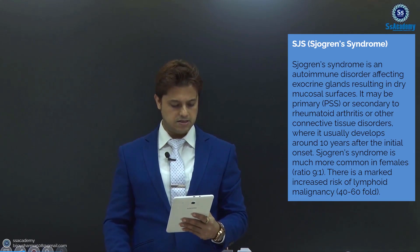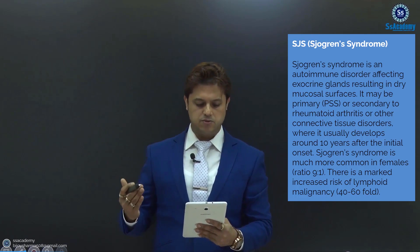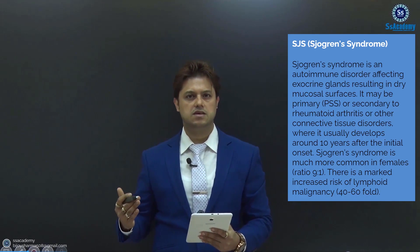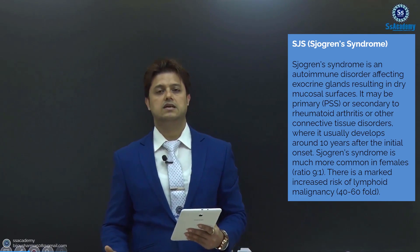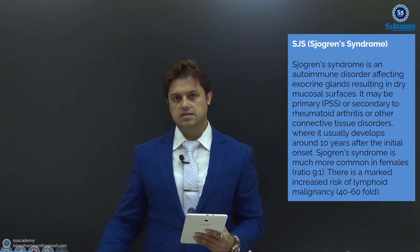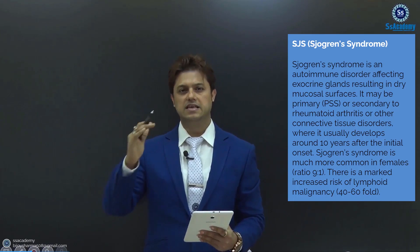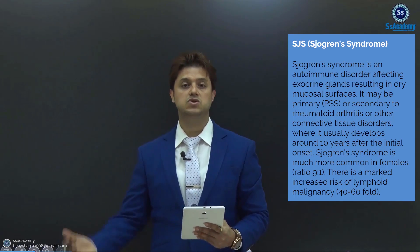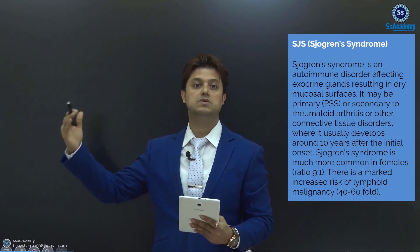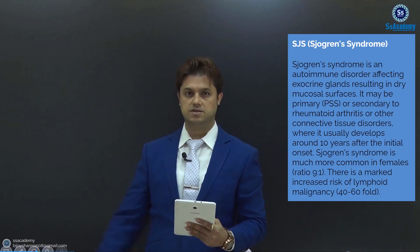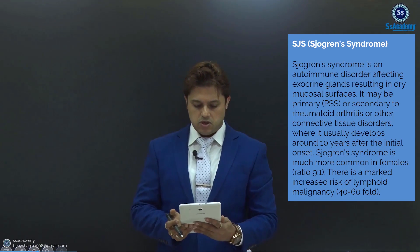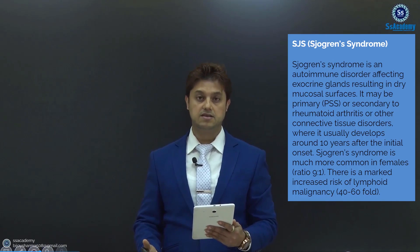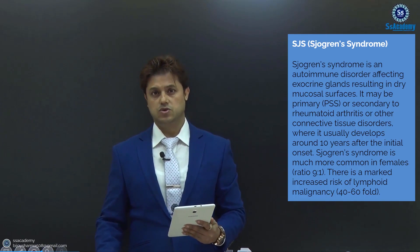Secondary Sjogren's syndrome usually develops around 10 years after the initial onset of rheumatoid arthritis. If there is no other secondary disease found, we call it primary. If a secondary disease like rheumatoid arthritis or another connective tissue disorder is present and can also affect the exocrine glands, we call it secondary. Sjogren's syndrome is much more common in females — 9 to 1 ratio.